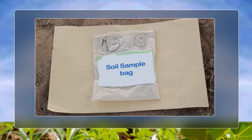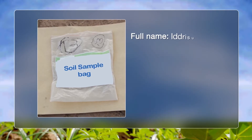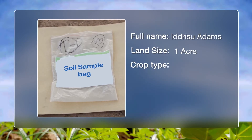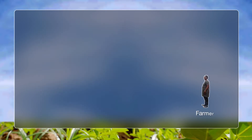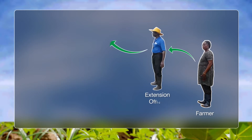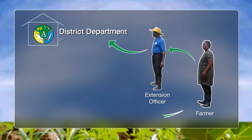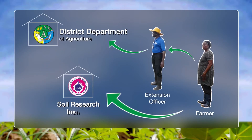Give your details on the envelope, for example your full name, land size, and the crop you want to grow. Take a sample of your soil to the Soil Research Institute or the District Agriculture Office to be analyzed. This enables you to find out the makeup of the soil and help you formulate a fertilization program for maximum yields.